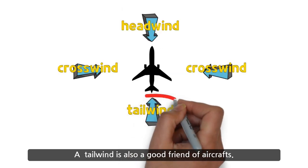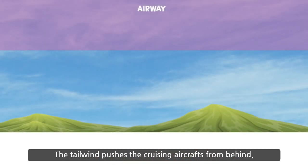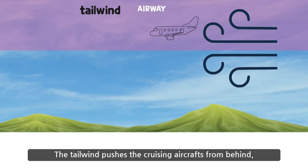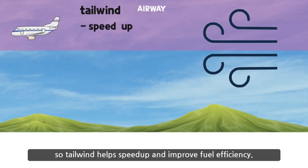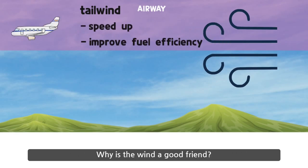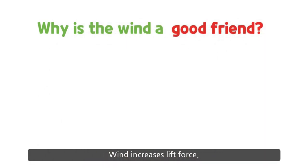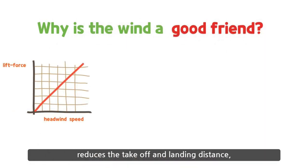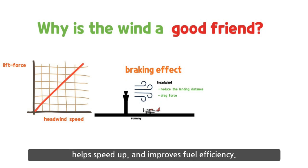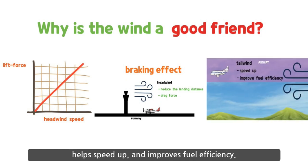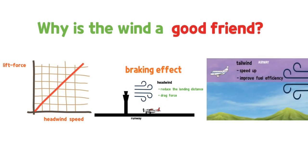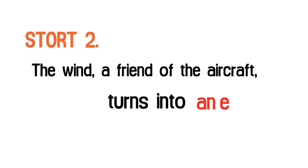A tailwind is also a good friend of aircraft. The tailwind pushes cruising aircraft from behind, helping to speed up and improve fuel efficiency. Why is the wind a good friend? Wind increases lift force, reduces the takeoff and landing distance, helps speed up, and improves fuel efficiency. Story 2: the wind, a friend of the aircraft, turns into an enemy.